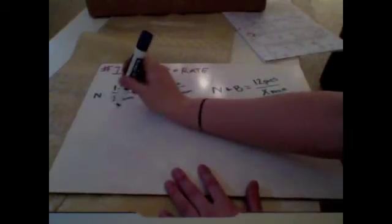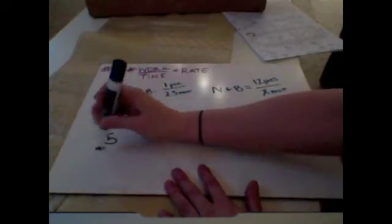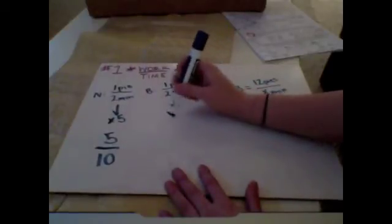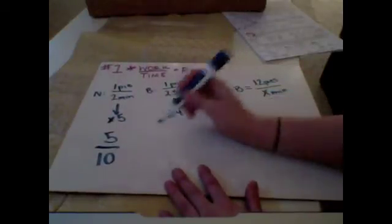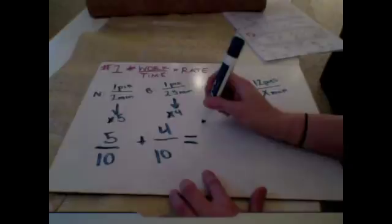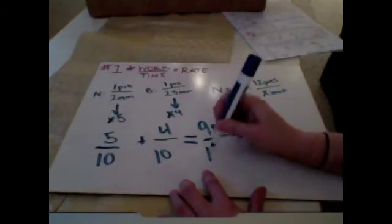So if I multiply this fraction here by five, I will get five tenths. If I multiply this fraction here by four, I will get four tenths. So together, we're eating nine pies in ten minutes.